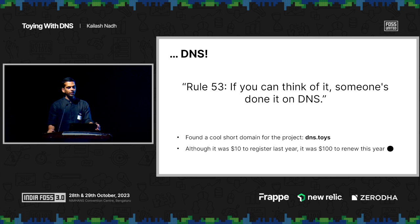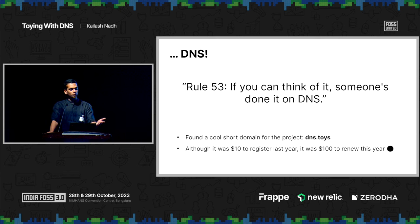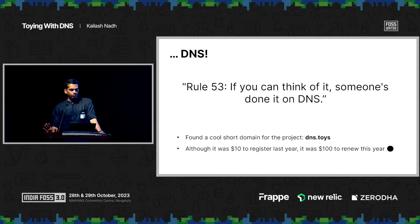I don't recollect exactly why DNS was in my mind, but it was. There's a funny adage on the internet — Rule 53. Port 53 is where DNS servers listen; they've been listening on port 53 for about 40 years. The joke goes: if you can think of it, someone's done it on DNS — and not in a good way. The DNS puritans hate people who abuse DNS, but it's fun to abuse DNS, like people running Quake on calculators and washing machines. I found a cool short domain name for the project: dns.toys. When I registered it last year it cost $10 — I renewed it this year, it's become $100. So don't use the .toys domain for your toy project.